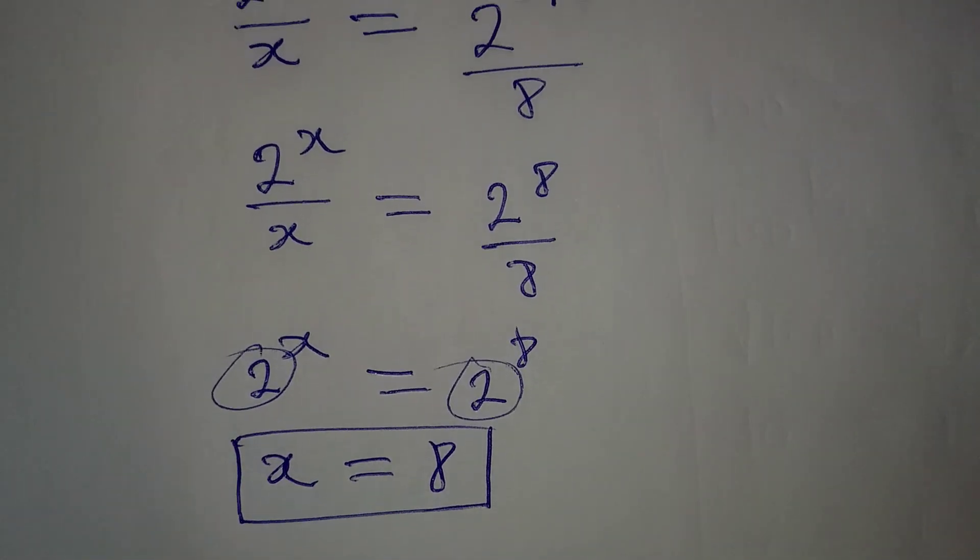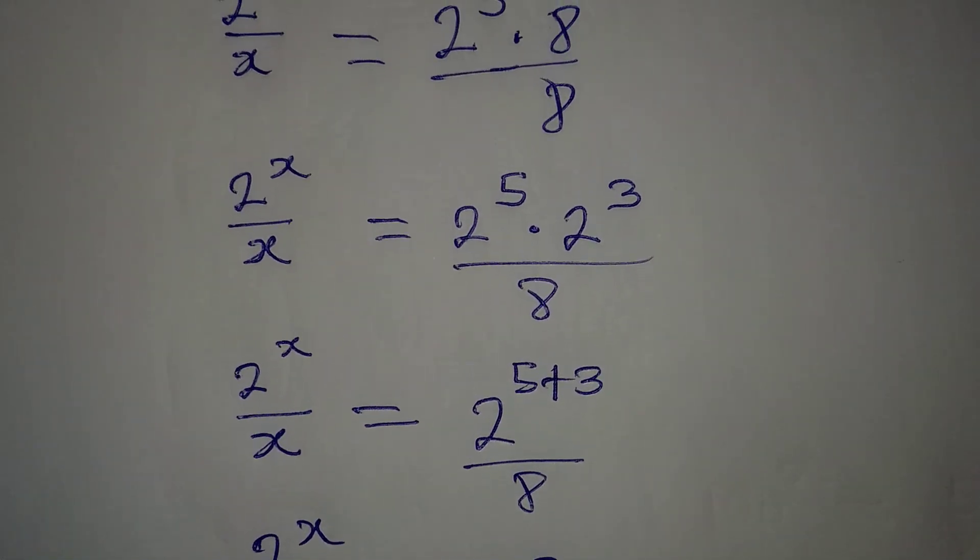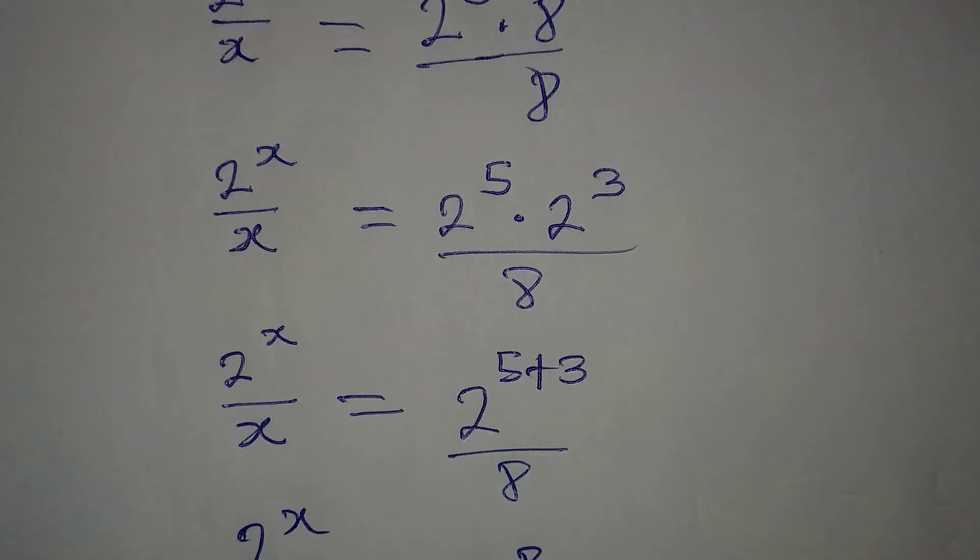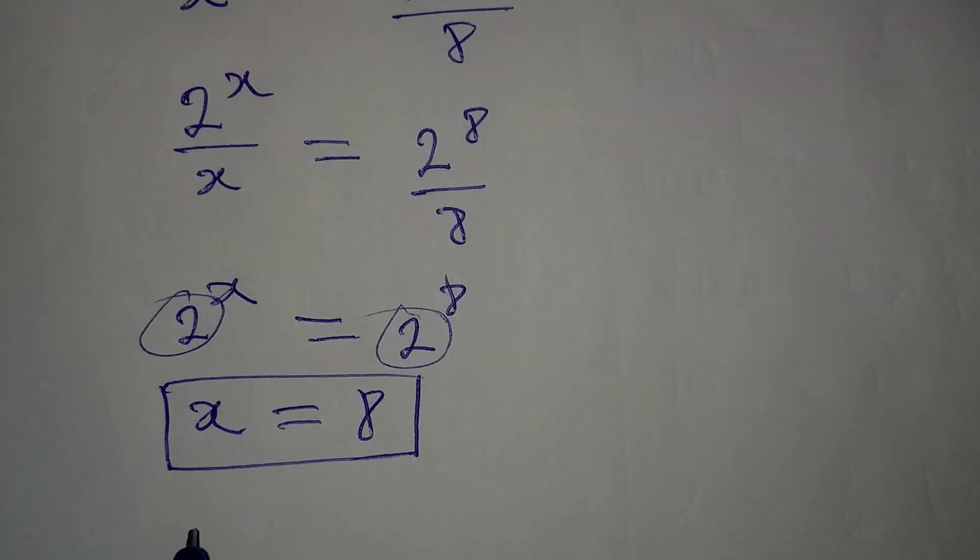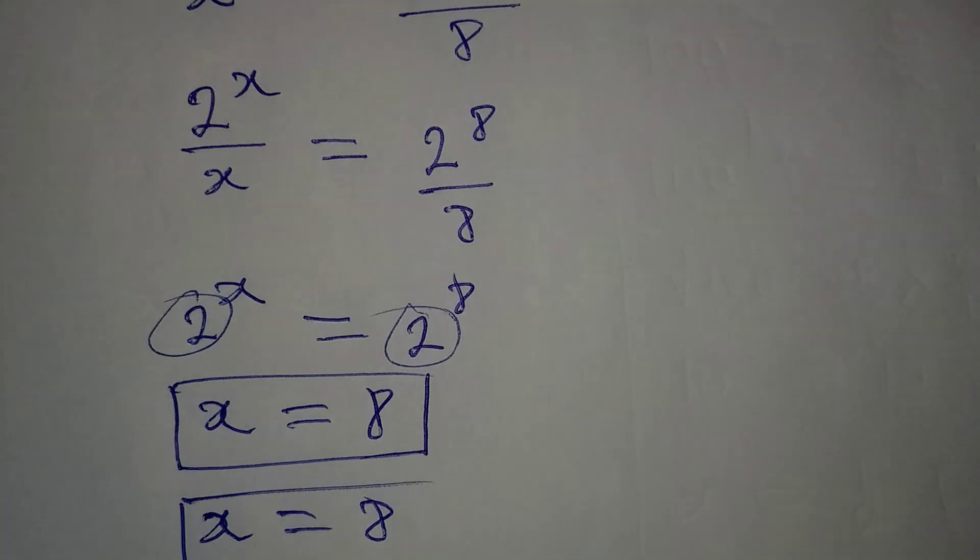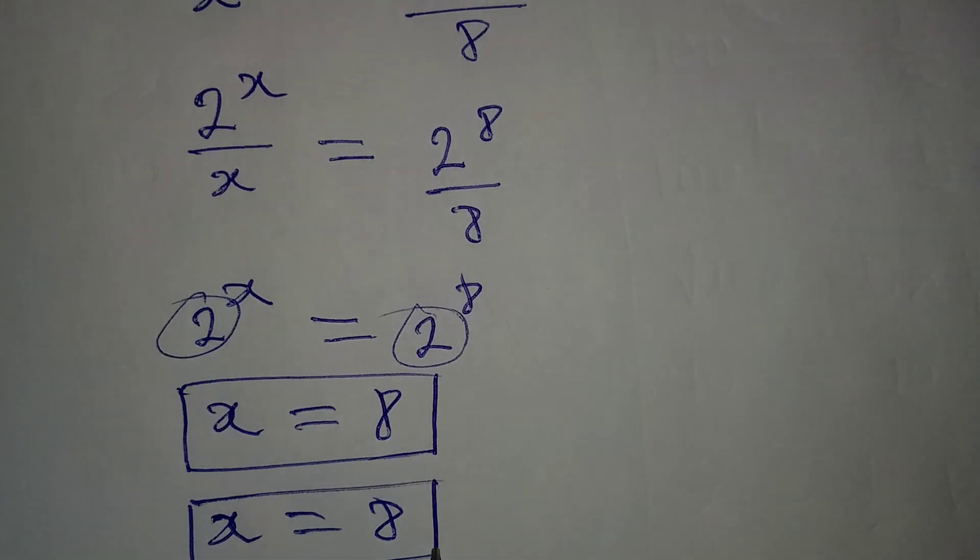Then, to work with the denominator, what do we have? We're going to have x to be equal to 8 directly. So to work with the denominator, we also have x to be equal to 8. So this is to confirm that our x is equal to 8.